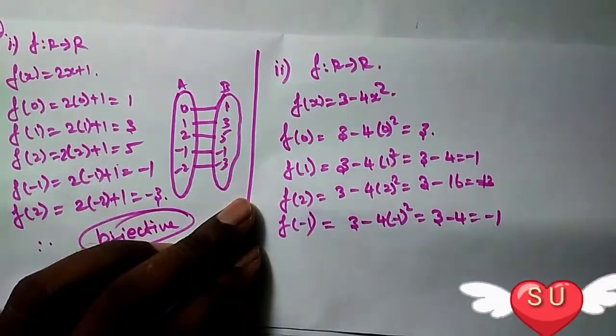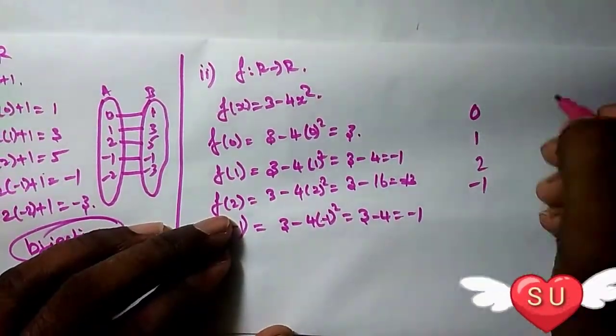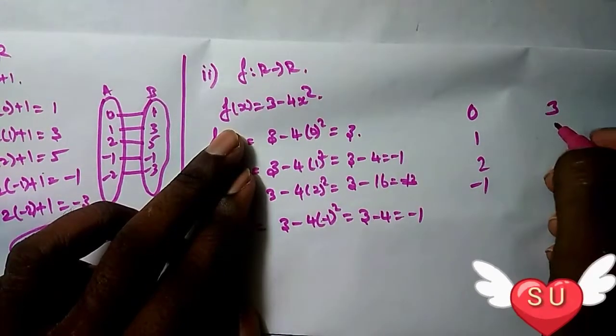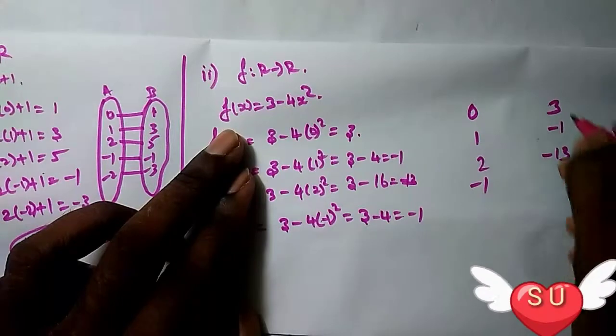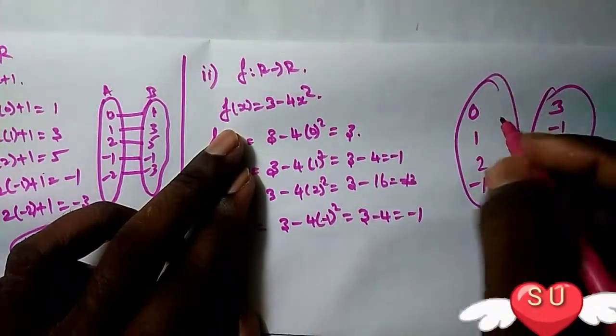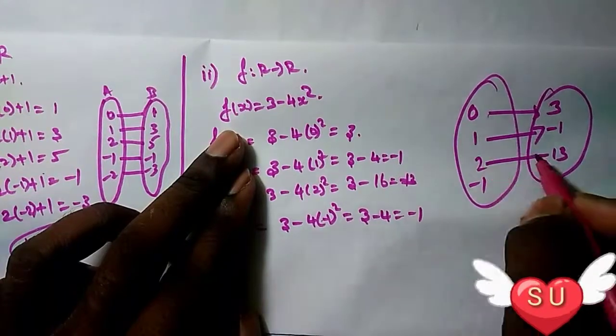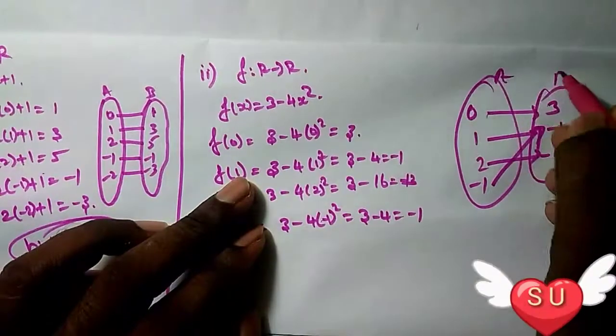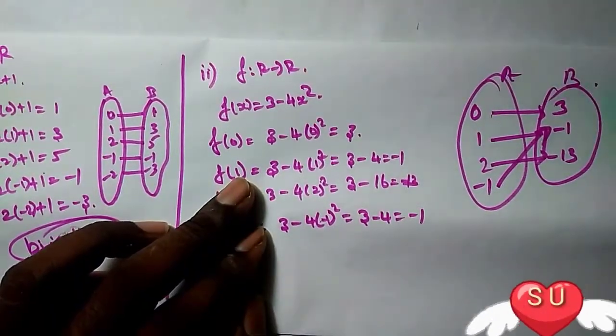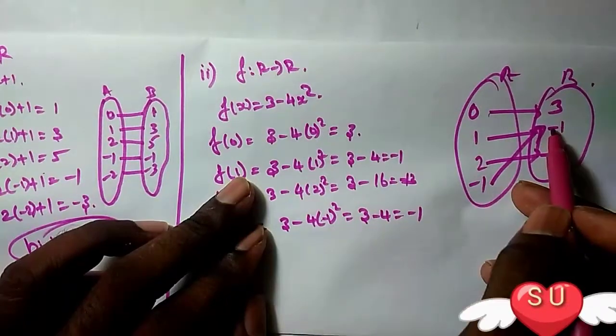Now f(-1) = 3 - 4(-1)² = 3 - 4 = -1. Notice that both 1 and -1 have the same image of -1.